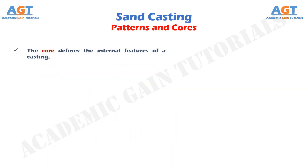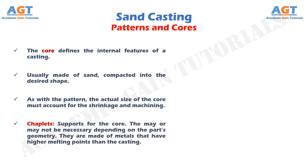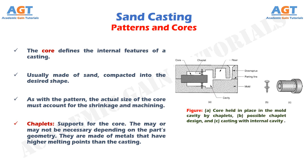The core defines the internal features of a casting. The core is usually made of sand, compacted into the desired shape. As with the pattern, the actual size of the core must account for shrinkage and machining. Chaplets are used as supports for the core. They may or may not be necessary depending on the part's geometry. They are made of metals that have higher melting points than the casting.